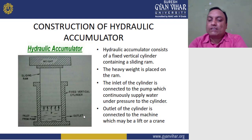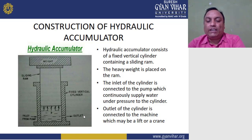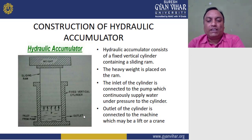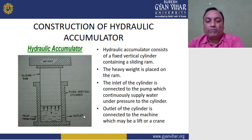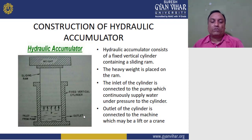The hydraulic accumulator consists of a fixed vertical cylinder containing a sliding ram, and a heavy weight is placed on the ram. The inlet of the cylinder is connected to the pump, which continuously supplies water under pressure. The outlet of the cylinder is connected to the machine — which may be a lift, crane, or any other device.